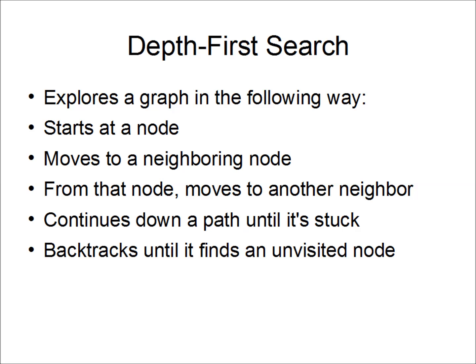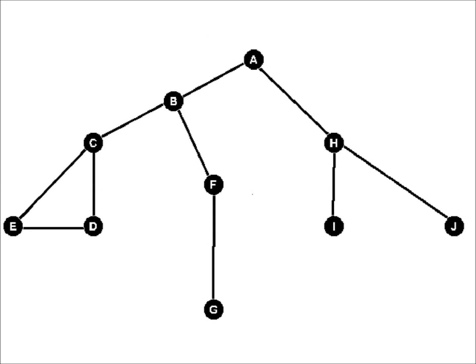It then repeats the process. Let's see how it works on an example graph. We'll start at vertex A.